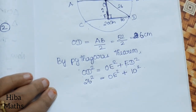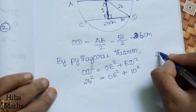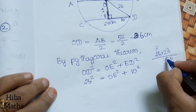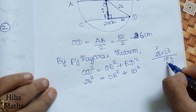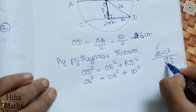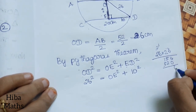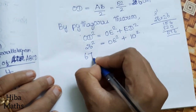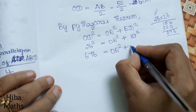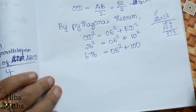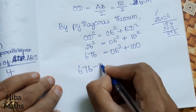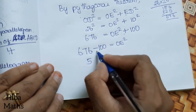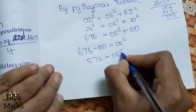CD squared is 10 squared. Now, 26 into 26: 6 sixes are 36, carry 3; 6 twos are 12, plus 3 is 15, carry 1; 2 sixes are 12, carry 1; 2 twos are 4, plus 1 is 5. So 26 squared is 676. Therefore, 676 is equal to OE squared plus 10 squared. 10 squared is 100. So OE squared equals 676 minus 100, which equals 576.